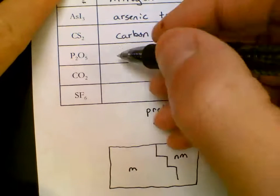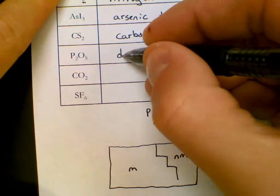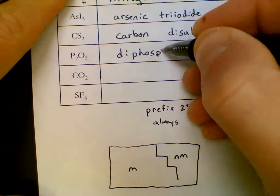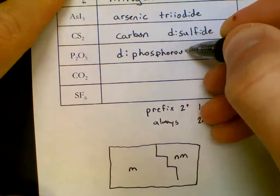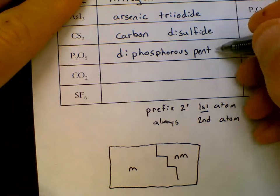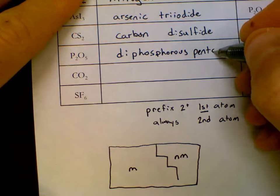This is the first formula that has a subscript on the first atom. The subscript will be di. P is phosphorus. Di phosphorus. Five is penta. So penta.